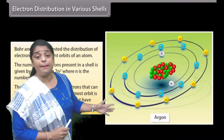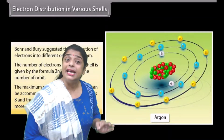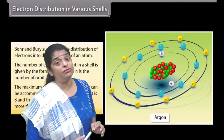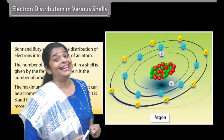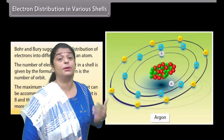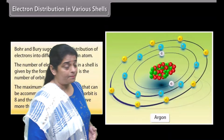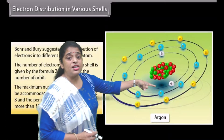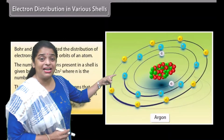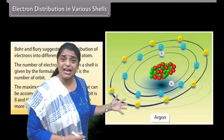Look at this atom — this is an example of argon's atom. Argon is an atom which has 18 electrons revolving around the nucleus, which consists of 18 protons. We are talking about electrons only because we are discussing the distribution of electrons. The first shell contains 2 electrons, the second shell consists of 8 electrons, and the third also has 8 electrons.